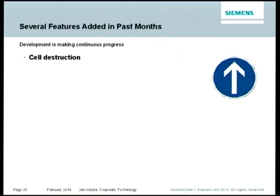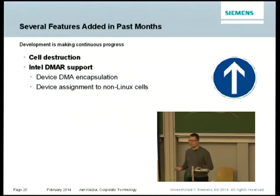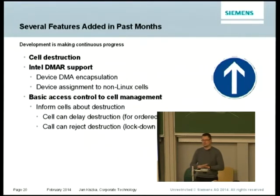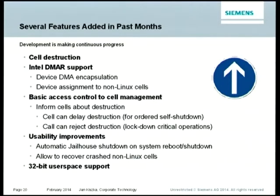We went public about four months ago and development has moved on. We now have cell destruction implemented — you can shut down a complete guest cell. We have complete support for device pass-through to other cells, meaning encapsulation of DMA requests sent from the device. We also recently implemented an access control mechanism: cells doing critical tasks should probably not be destroyed at arbitrary points, so we implement an interface for critical cells to communicate with the hypervisor before executing a destruction command — they can vote against it or delay it for an ordered shutdown. There are further improvements on usability; it's still an early stage with some rough edges, but improving step by step.